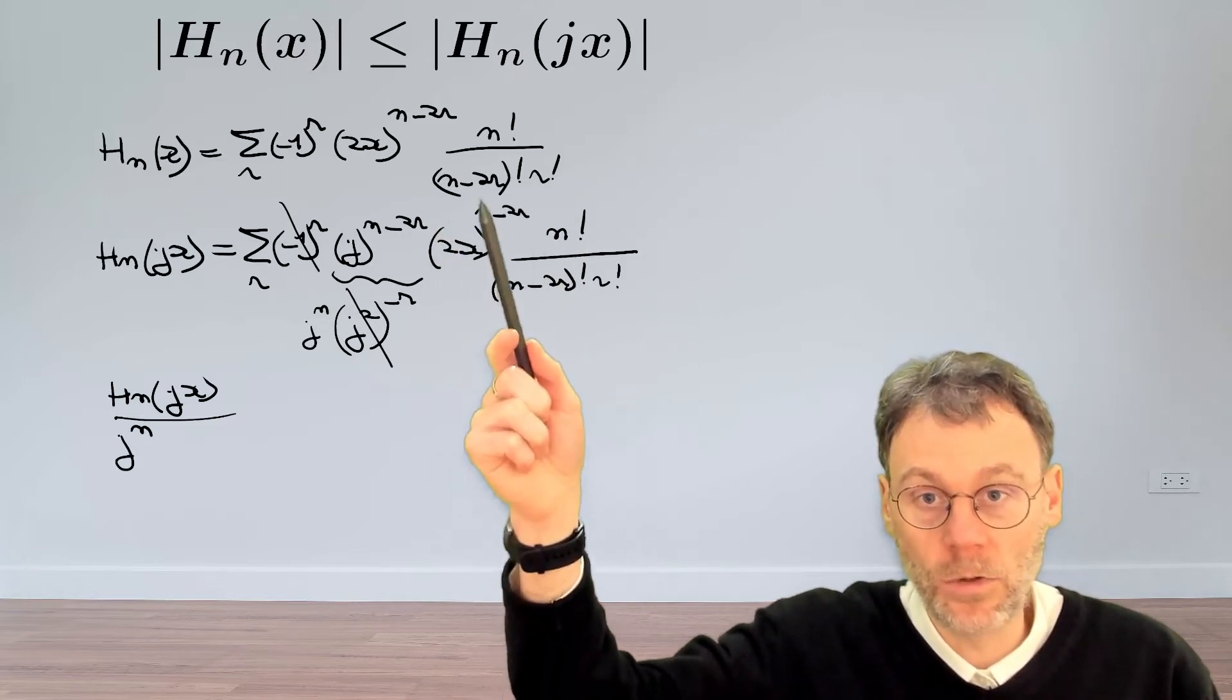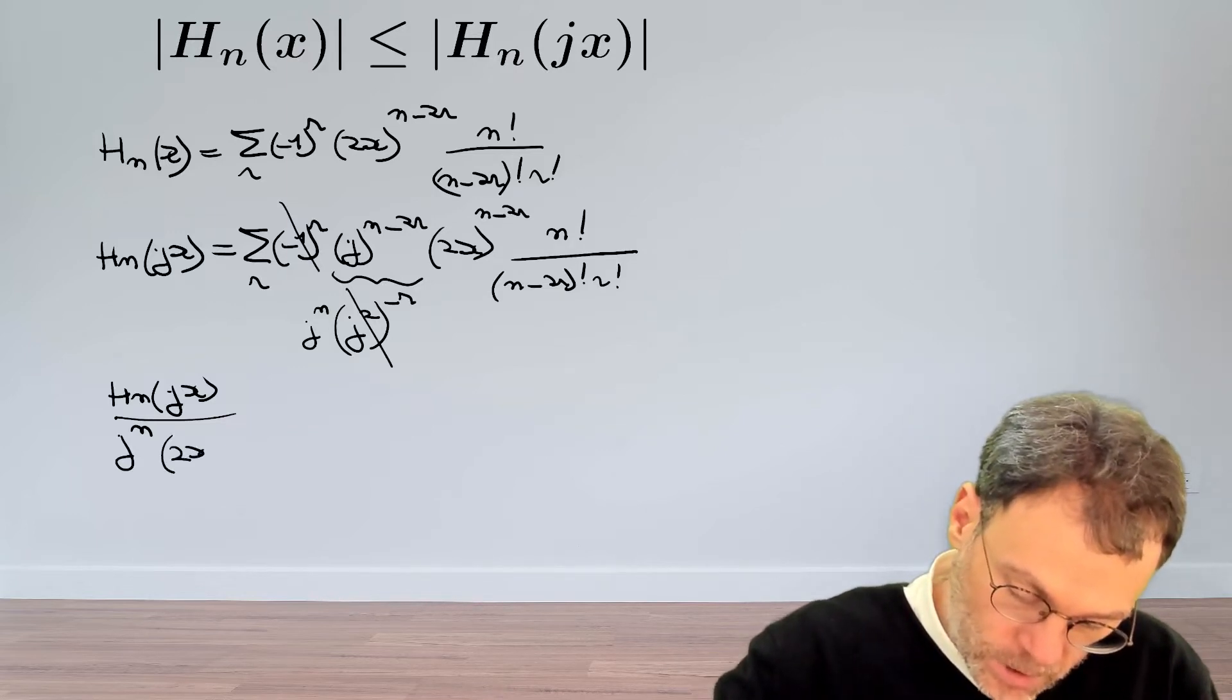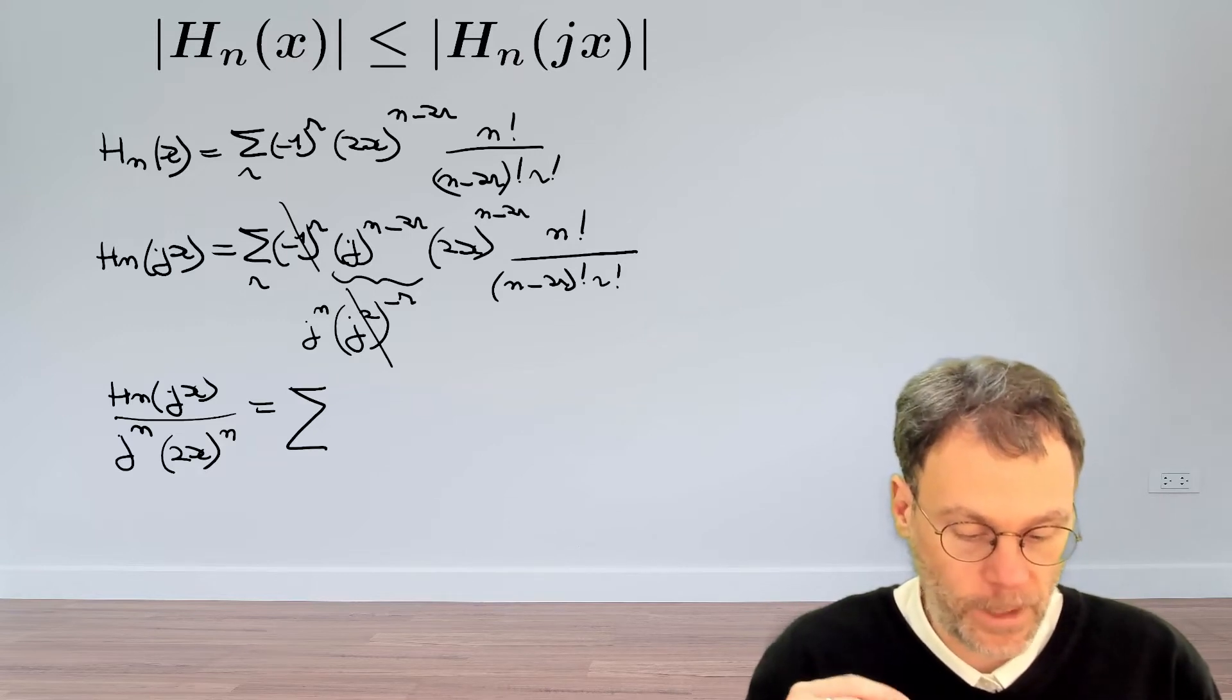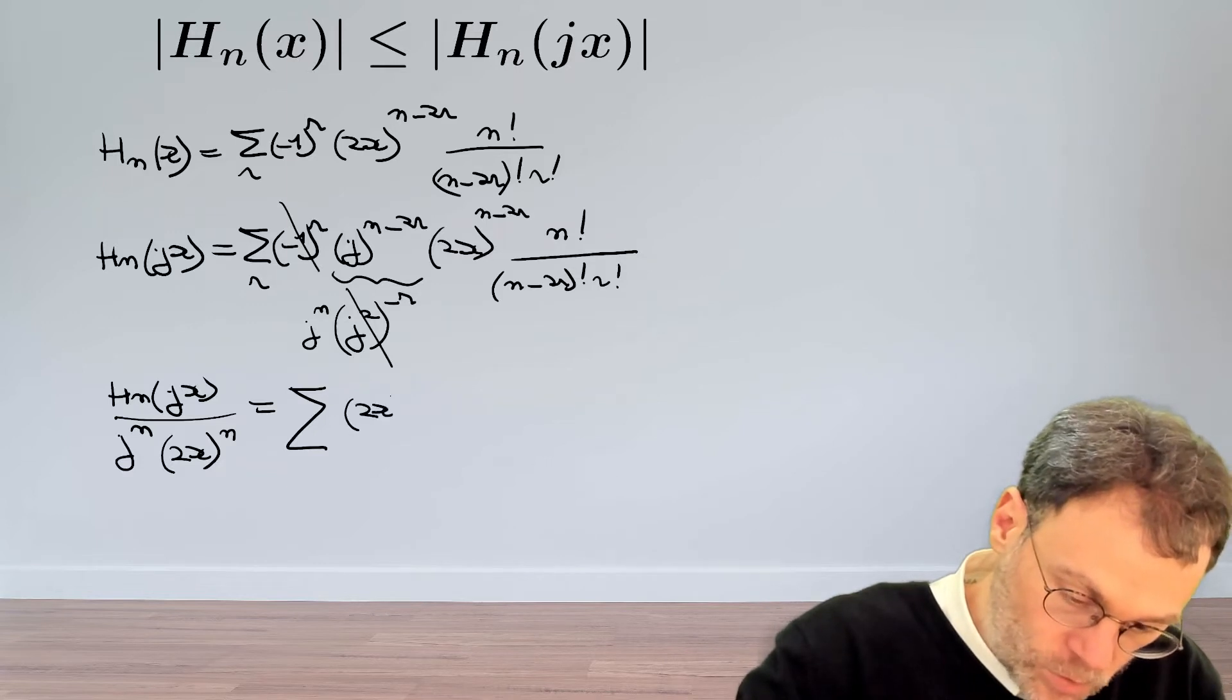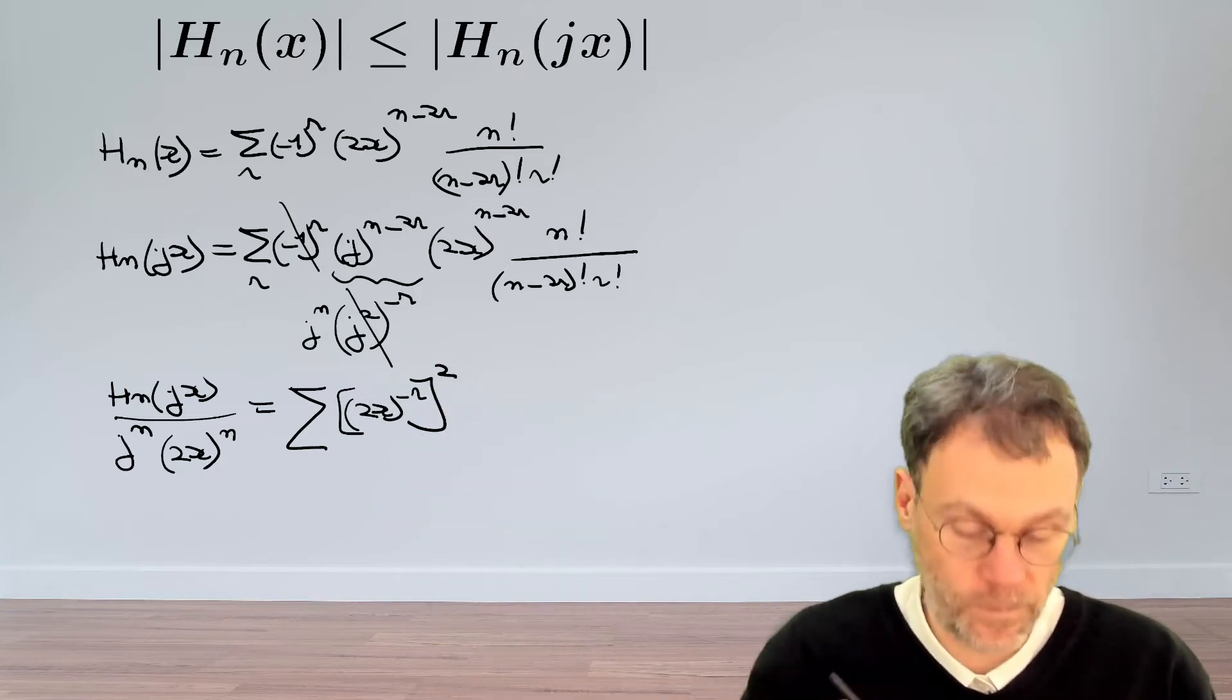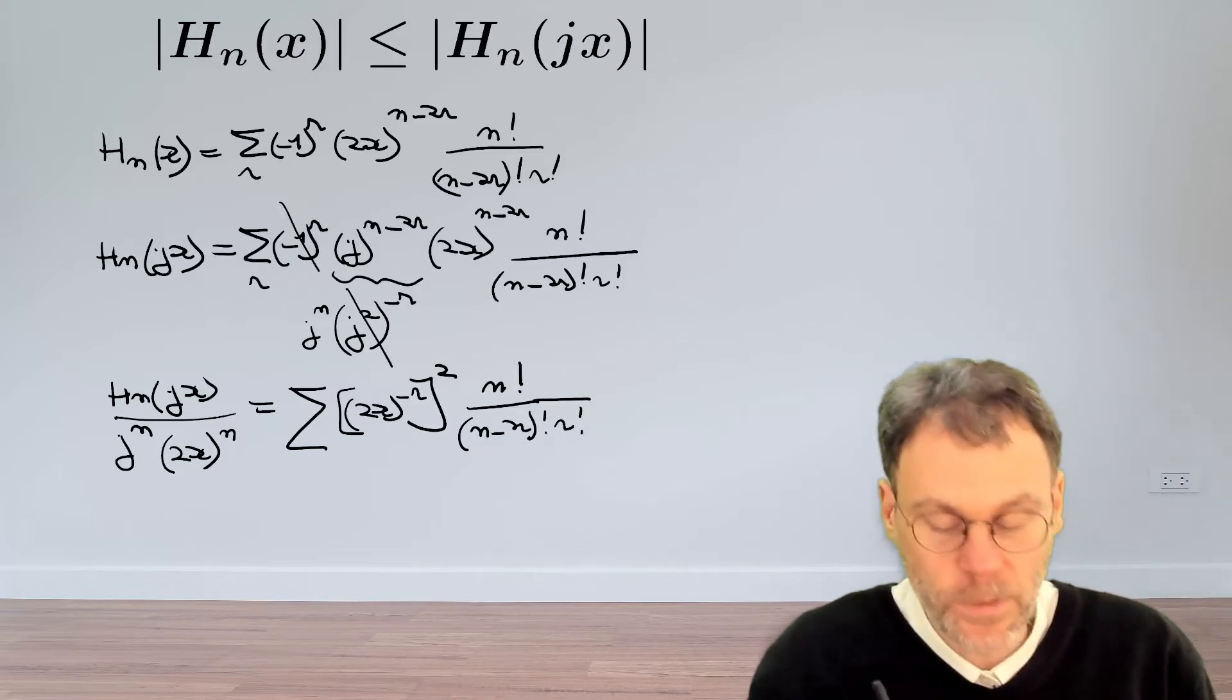Another problem could be this term over here, and more specifically 2x to the power of n. Depending on the value of x and the parity of n, that could also be a negative number, so let's bring that also to the left-hand side, so we have 2x to the power of n, and what do we have then still left? We have a sum over r, and then we have 2x to the power minus 2r, and that we can write as 2x to the power of minus r squared. The reason why I write it like this is just to make it absolutely clear that this is a positive number, and then we have some more positive numbers, our factorials, so no need to worry about those, they will always be positive.